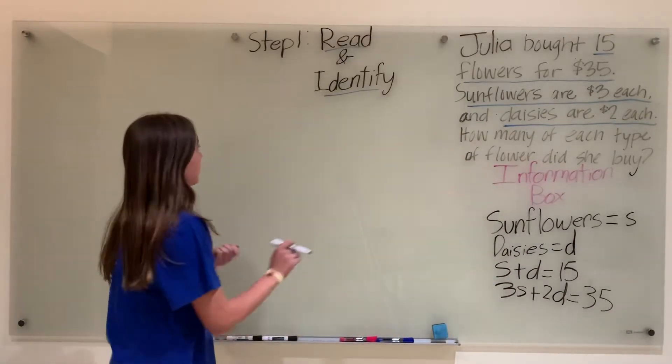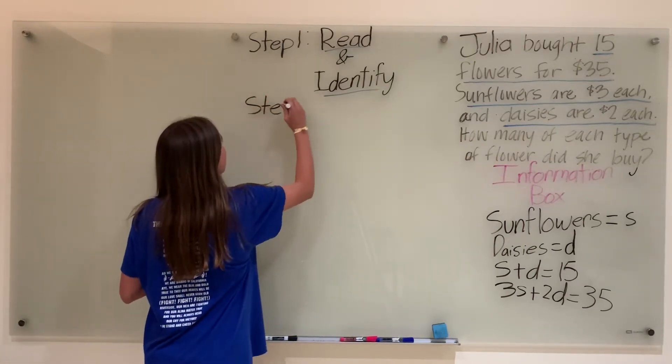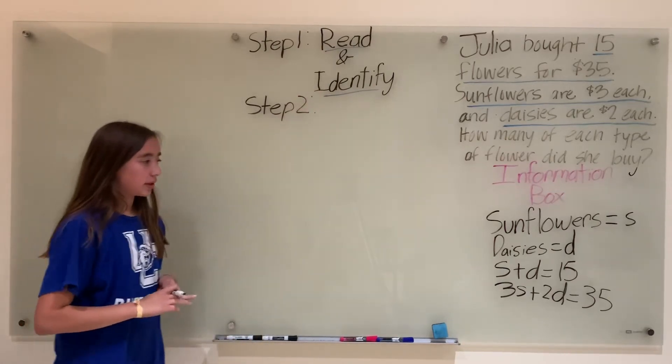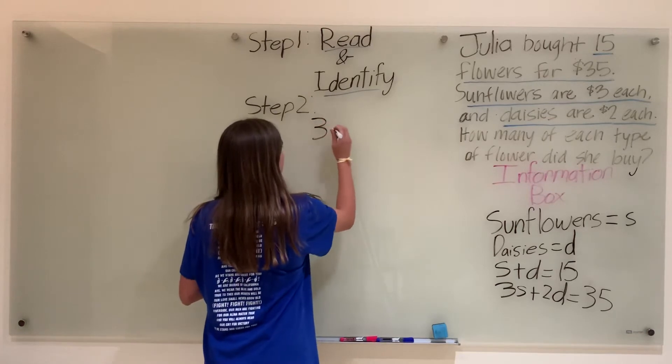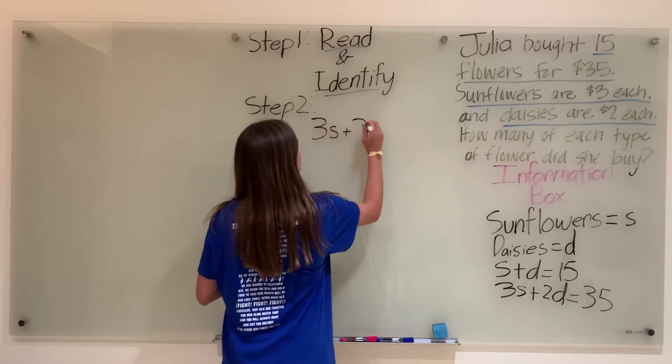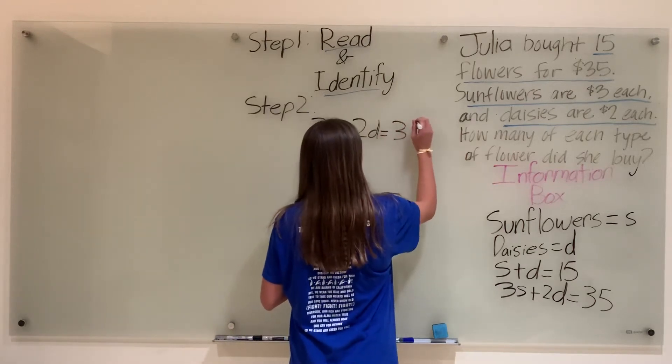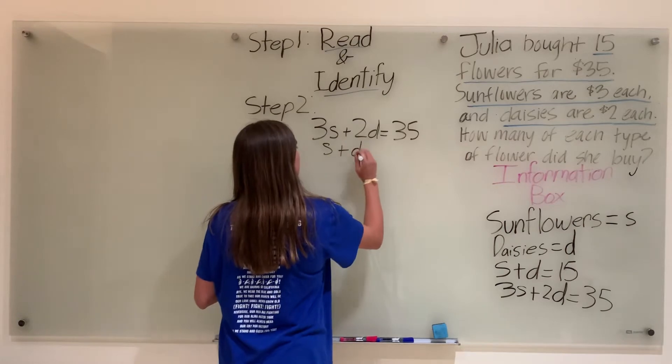Now, on to step 2. Step 2 is to figure out a way that we could eliminate a variable. So writing our equations, we have 3s plus 2d equals 35, and we have s plus d equals 15.